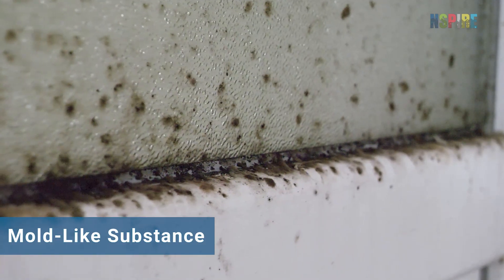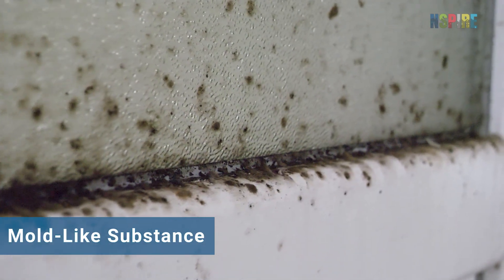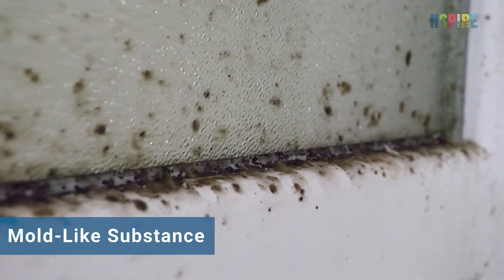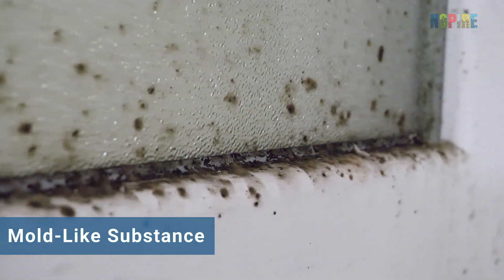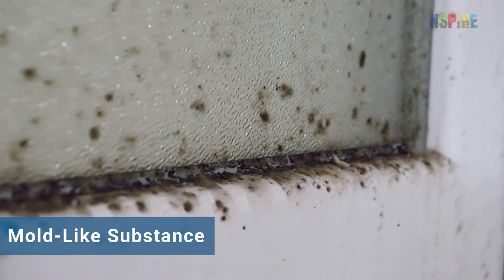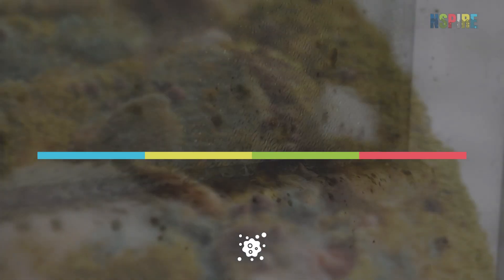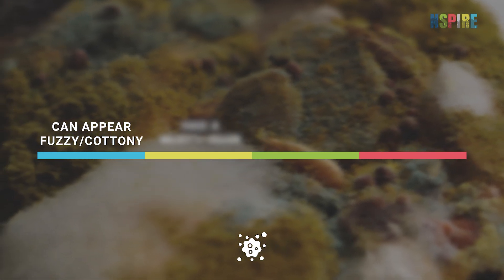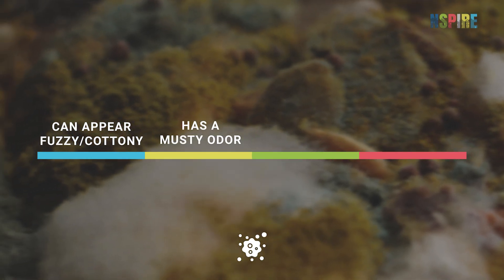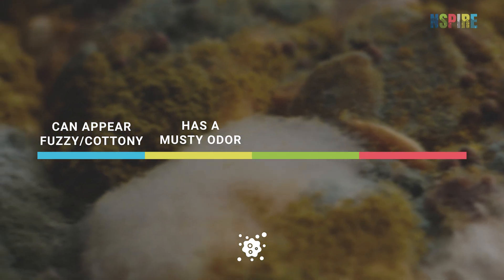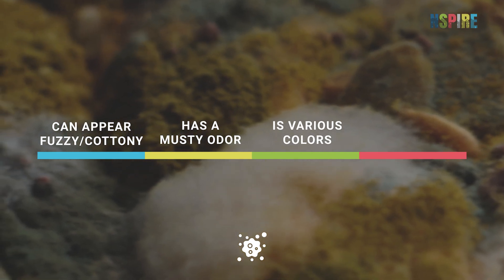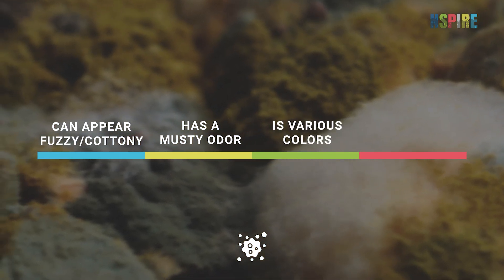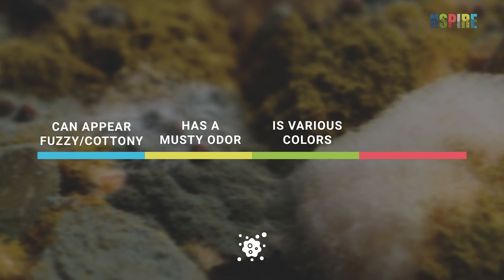Mold-like substance refers to regular or irregular patches or spots on surfaces, and is sometimes identified as mildew. It can appear fuzzy or cottony, have a musty or earthy odor, and be various colors including white, green, yellow, gray, brown, or black.